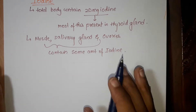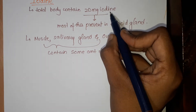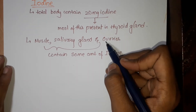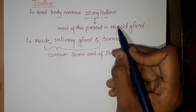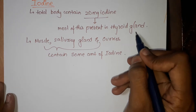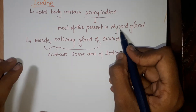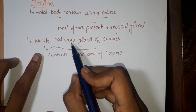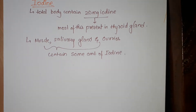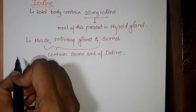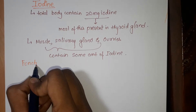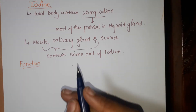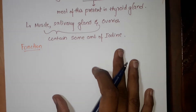In our body, 20 mg iodine is contained and most of this is present in the thyroid gland. You all know the thyroid gland — if there is any imbalance in the thyroid gland it will cause disease. Apart from thyroid gland, iodine is also present in muscles, salivary gland, and ovaries.